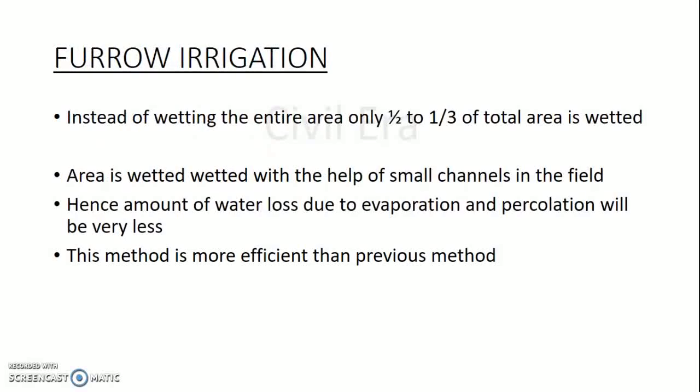Our next method is furrow irrigation. In this method, instead of wetting the entire area, only one-half to one-third of the total area is wetted. The area is wetted with the help of small channels in the field. As the amount of water loss due to evaporation and percolation will be very less, this method is more efficient than the previous methods.